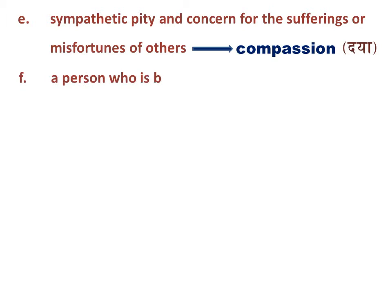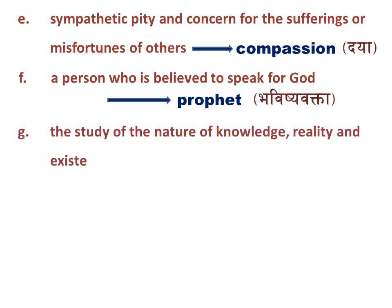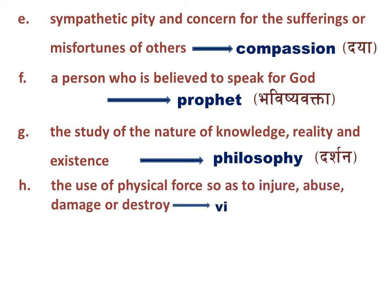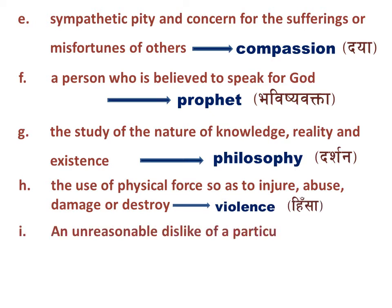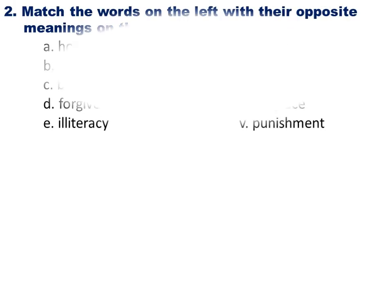F: A person who is believed to speak for God — this is 'prophet' (in Nepali: bhavishya vakta). G: The study of the nature of knowledge, reality and existence — this is 'philosophy' (darshan). H: The use of physical force so as to injure, abuse, damage or destroy — this is 'violence' (himsa). I: An unreasonable dislike of a particular group of people or things — this is 'prejudice' (purva graha).